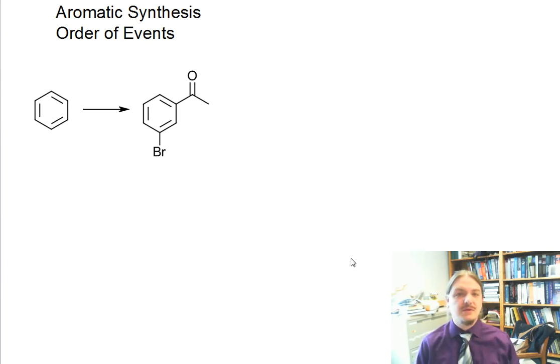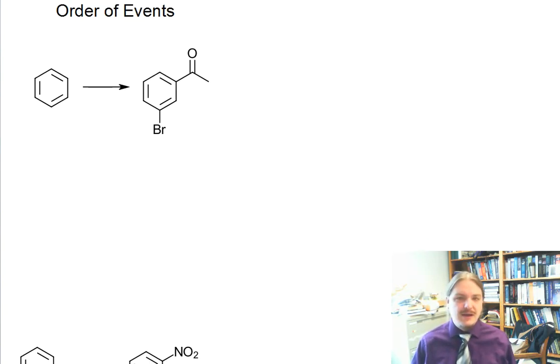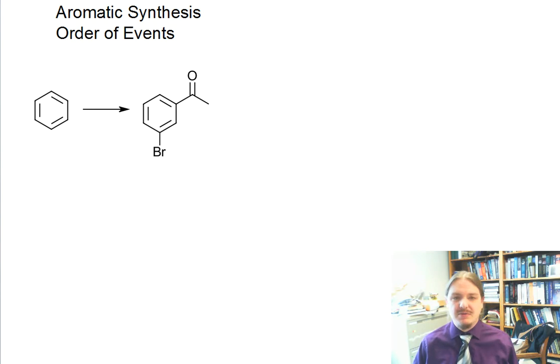Hello. In this video, I'm going to talk about use of aromatic substitution reactions in synthesis, focusing on what I call order of events. So many aromatic synthesis problems might look on the surface relatively simple. I have an example here where we're making metabromoacetophenone from benzene.